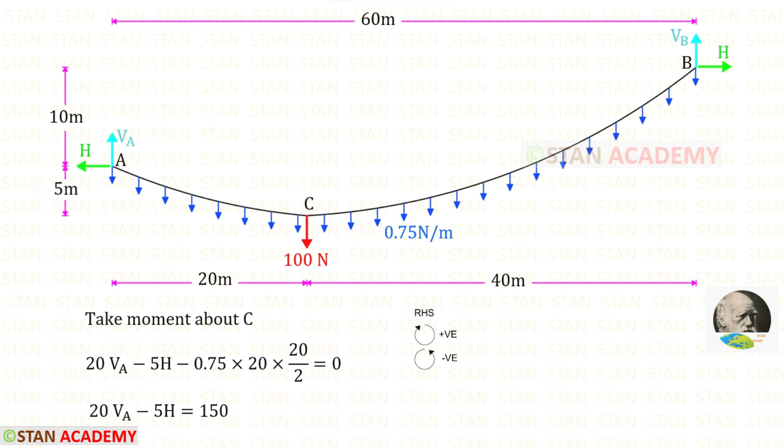The uniformly distributed load is acting in the anti-clockwise direction so it will be negative and the distance is 20. After multiplying these three we get minus 150. Let us take that on the other side so it becomes positive.